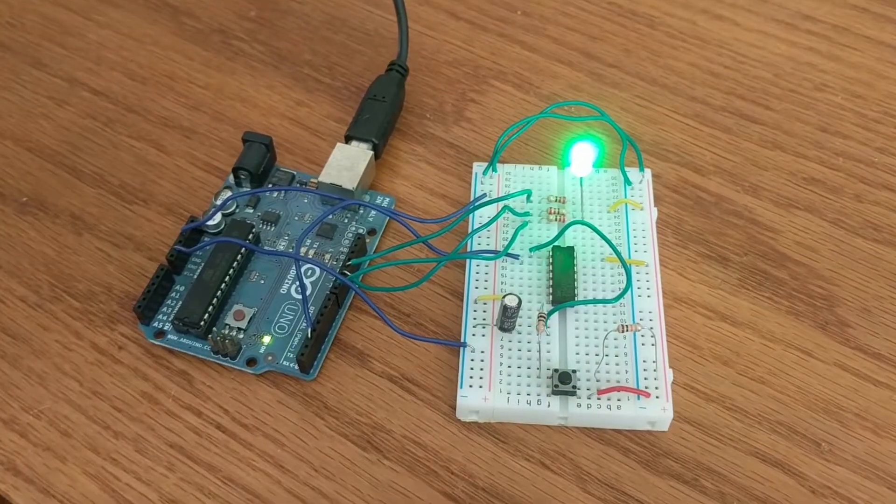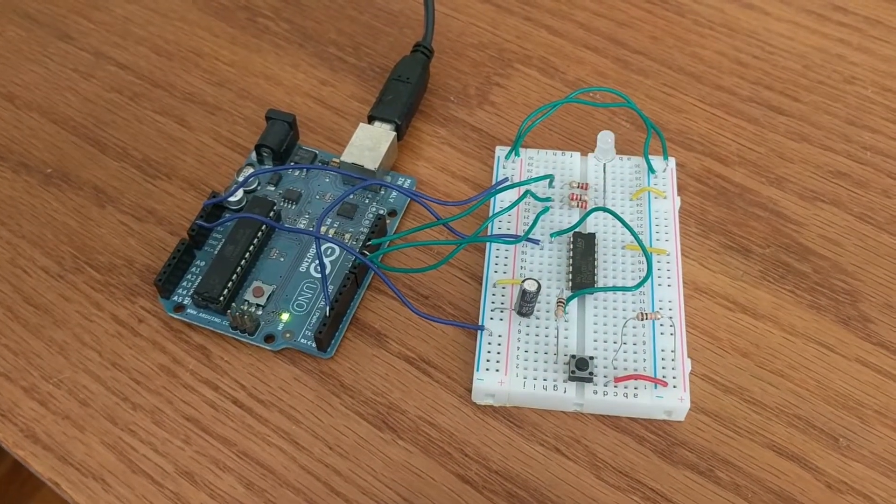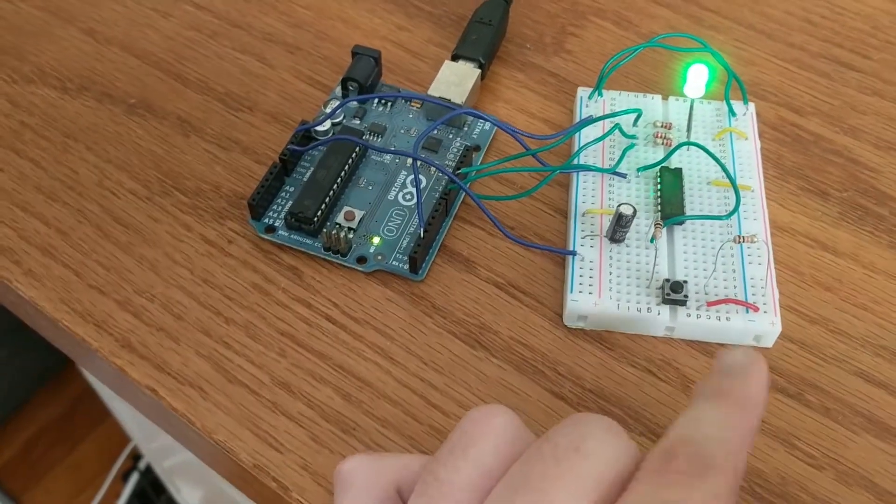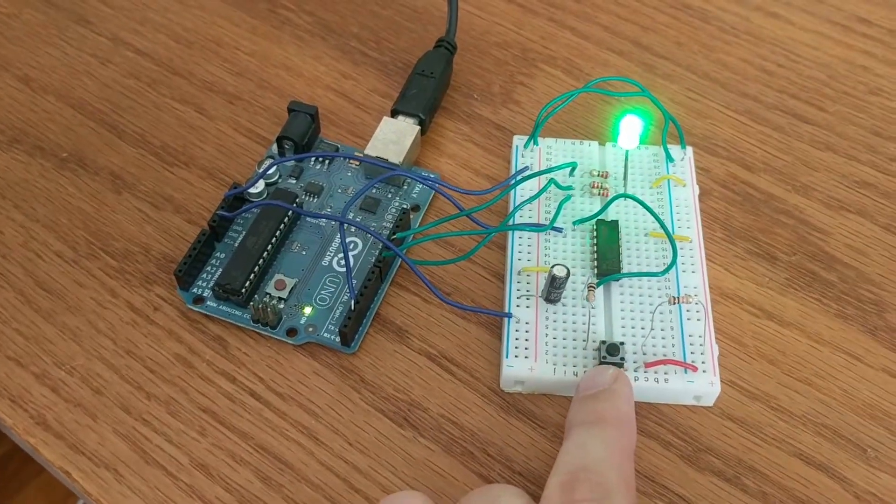So in this example, we're learning about hardware debouncing and interrupts. The way this circuit is set up is we have our switch right here.